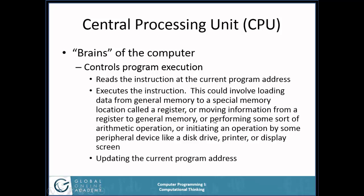The central processing unit is the brains of the computer. It controls program execution. As we discussed when looking at the diagram, it reads the instruction at the current program address and executes it. This could be loading data from general memory to a special memory location called a register that's built right into the CPU and works very fast, or moving information from a register into general memory, performing an arithmetic operation, or initiating an operation from a peripheral device. Then the CPU updates the current program address.